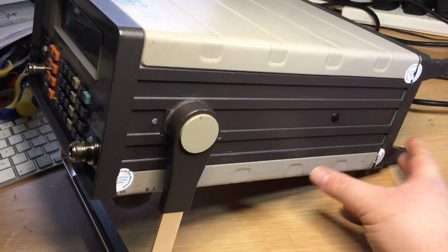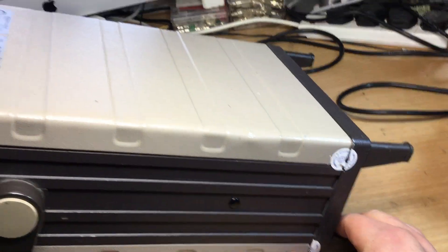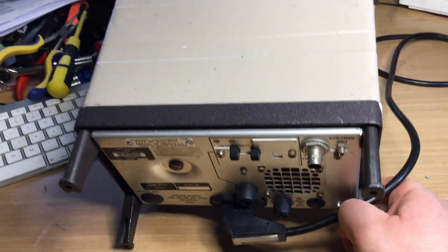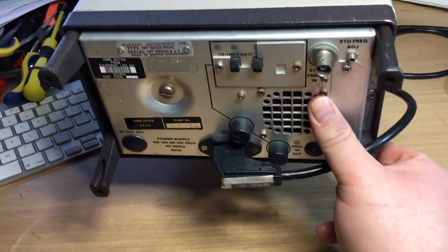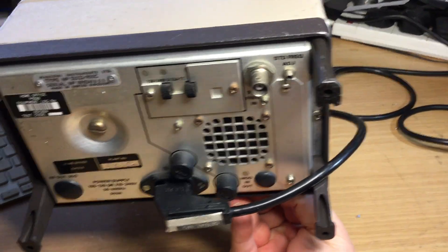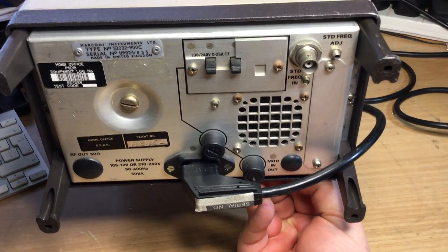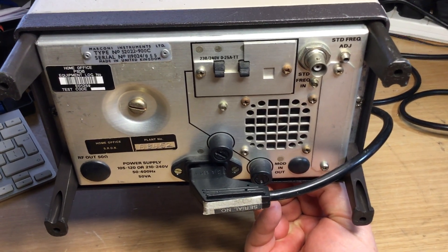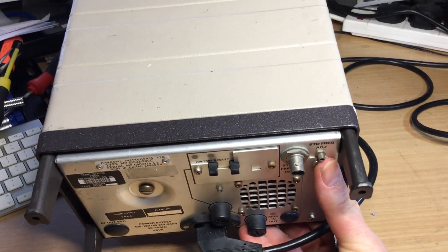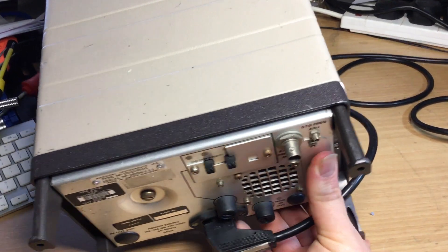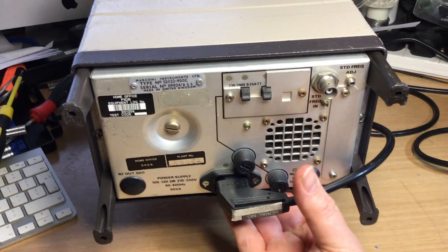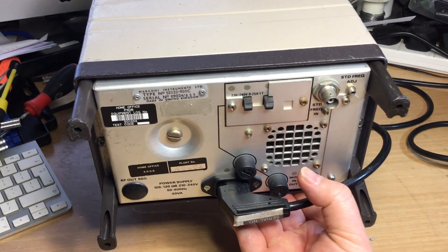On the rear we've got voltage selection for different countries' power supplies, and we have a frequency standard input on the top right. We can also calibrate it as well using this adjustment pot there to adjust it, and we can select different voltages and the fuses at the back.